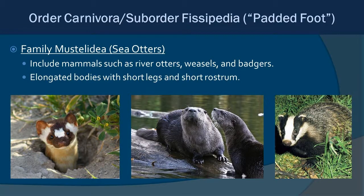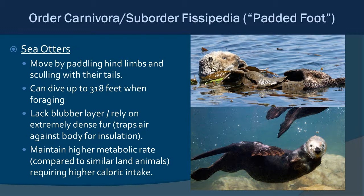Our first group is Family Mustelidae, which includes sea otters as well as weasels, badgers, and river otters. All are characterized by elongated bodies, short legs, and short rostrums. Sea otters exist on the west coast of the United States — not in Florida. They swim by paddling their hind legs and sculling with their tails, and can dive up to about 318 feet when foraging.